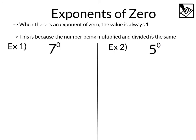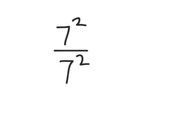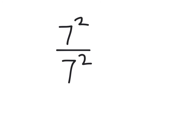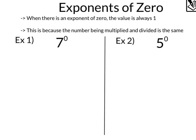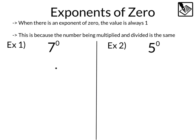This last law makes zero sense at first, but it makes perfect sense once we think about it a little more — exponents of zero. When there is an exponent of zero, the value is always one. This is because the number being multiplied and divided is the same. For example, if we had seven squared over seven squared, seven squared divided by seven squared is one, but using our subtraction rule, that would be two minus two, which would be seven to the zero. So since we need everything to be equal, we make anything to the zero power one. Looking at these examples, seven to the zero power is going to be one, and five to the zero power is also one.